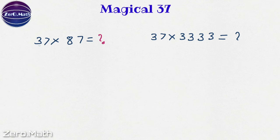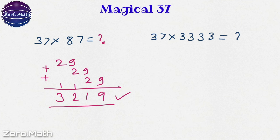Let's quickly multiply 37 by 87. So we know 87 divided by 3 is 29. Let's write it like this: 29 three times and add it in the given fashion. 9, 9 plus 2 is 11, carry 1. 9 plus 2 is 11 and 1 is 12, carry 1. 2 plus 1 is 3. So 3219 is the answer.